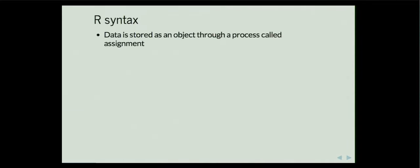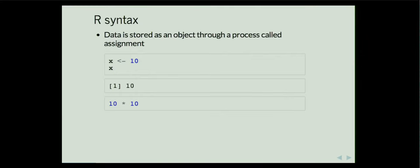So, R syntax. You assign data to an object. Here I say that 10 is X — this is pretty straightforward for those of you that use MATLAB or anything like that. There are a couple of different assignment operators that we'll discuss in a minute. When you type X, you get 10 — so X equals 10. That's pretty straightforward. And with these you can do multiplication and all sorts of stuff. If you type 10 times 10, you get 100. Go figure.